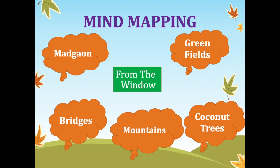Let's start with the mind mapping of this chapter. From the Window — what did Omana see from the window? She saw Madgaon, green fields, some coconut trees, mountains, and some bridges from the window.